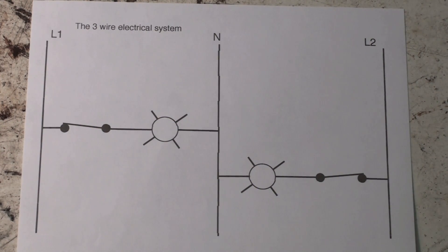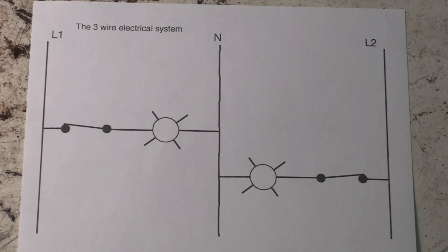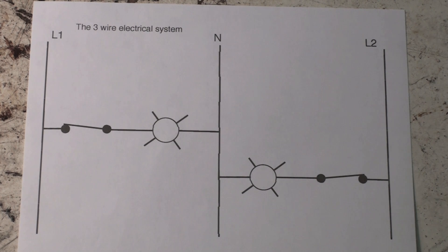Okay, this one's on the three-wire electrical system. This is what you find in most homes that have single-phase power in them. They actually use a three-wire system, and this is a schematic representation showing line one, line two, and neutral.